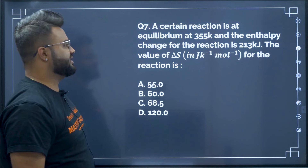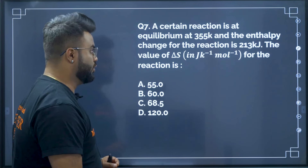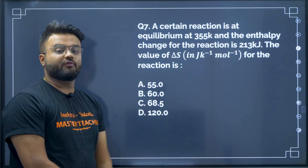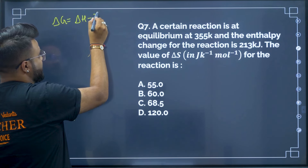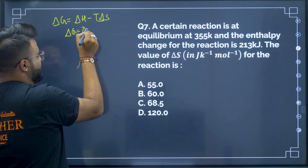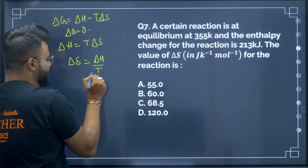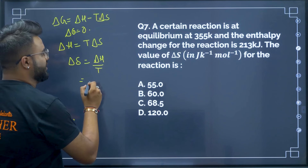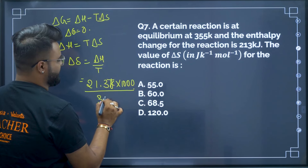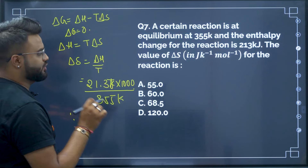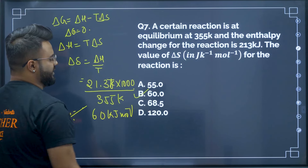Question 7: A reaction is at equilibrium at 355 K, and the enthalpy change is 213 kJ. Find the value of ΔS for spontaneity. We know ΔG = ΔH − TΔS. At equilibrium, ΔG = 0, so ΔS = ΔH/T = 213,000 J / 355 K. When you calculate this, you get ΔS = 600 J/K·mol. Therefore option B is your correct answer.